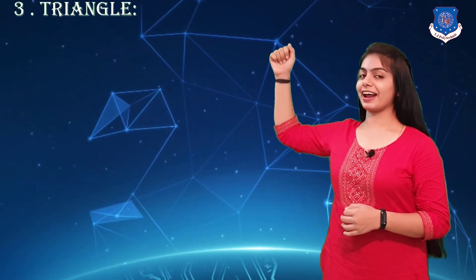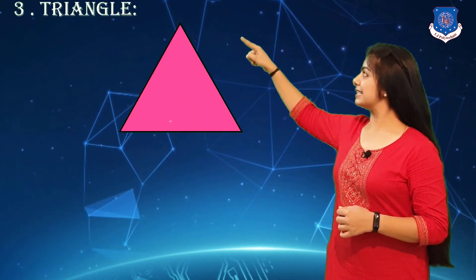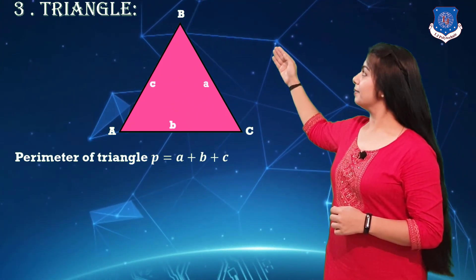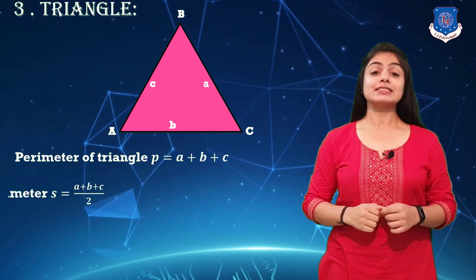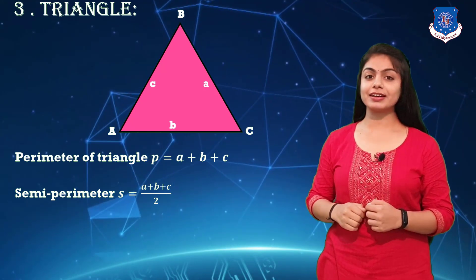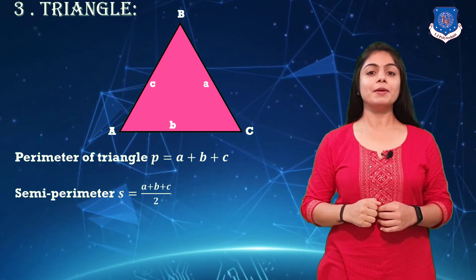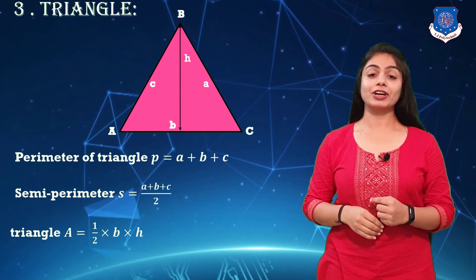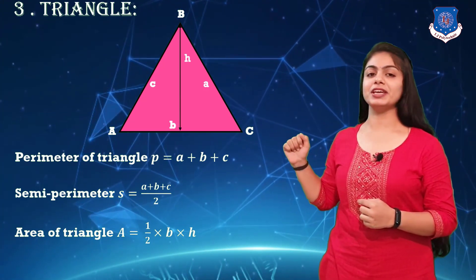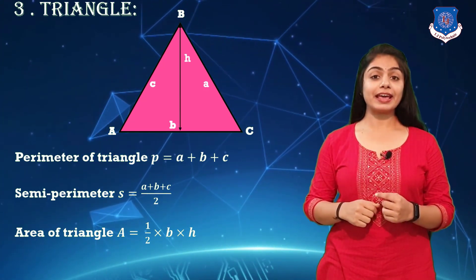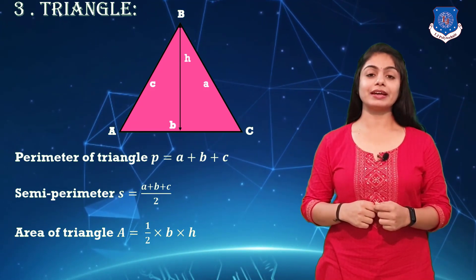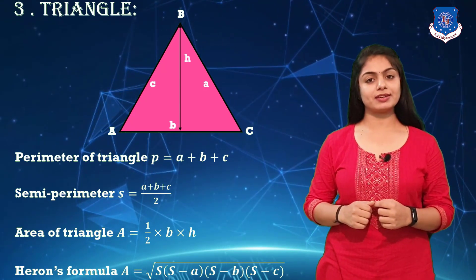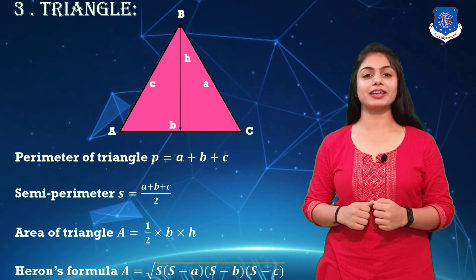Our third plane figure is the triangle. In a triangle, sides are denoted by small a, b, and c. The perimeter of a triangle is a + b + c. The semi-perimeter is denoted by s, where s = (a + b + c)/2. The area of a triangle is (1/2) × base × height. The Heron's formula for area is √(s(s−a)(s−b)(s−c)).